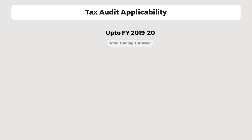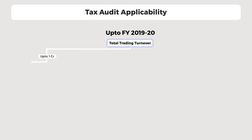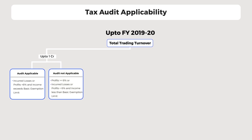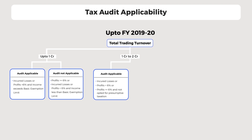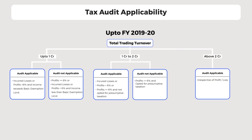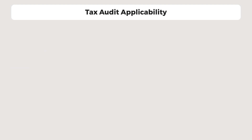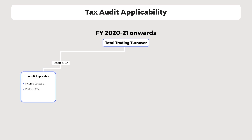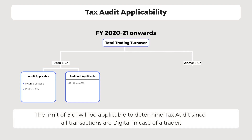Up to financial year 2019-20, when trading turnover is up to 1 crore, tax audit is applicable if profit is less than 6% of the turnover or total income is above the basic exemption limit, and not applicable if profit is more than or equal to 6%. When trading turnover is between 1 crore and 2 crore, tax audit is applicable if profit is less than 6% of the turnover, or when profit is more than or equal to 6% but the trader has not opted for presumptive taxation under Section 44AD. Tax audit is not applicable when profit is at least 6% and the trader opts for Section 44AD. Tax audit is mandatory when trading turnover is above 2 crore. From financial year 2021 onwards, when trading turnover is up to 5 crore, tax audit is applicable when profit is less than 6%, and not applicable when profit is 6% or more. Tax audit is mandatory when trading turnover is above 5 crore.